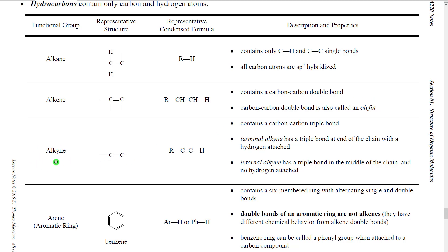The third type of hydrocarbon is the alkyne — so notice: alkane, alkene, alkyne. An alkyne has a carbon-carbon triple bond. There are two types of alkynes. A terminal alkyne has the triple bond at the end of a carbon chain with a hydrogen directly attached. An internal alkyne has the triple bond in the middle of a carbon chain, represented as R–C≡C–R. When we get to alkynes, we'll see that terminal alkynes behave differently from internal alkynes in some situations.